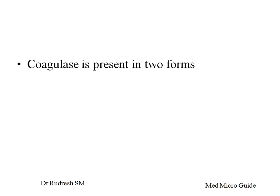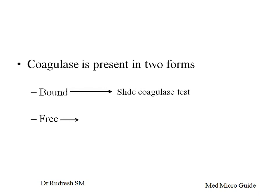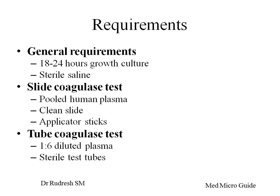Coagulase occurs in two forms: bound coagulase and free coagulase. Bound coagulase can be detected by the slide coagulase test, and free coagulase can be detected by the tube coagulase test.